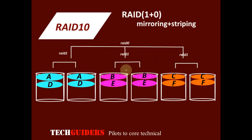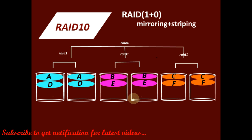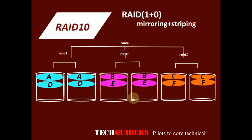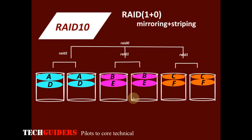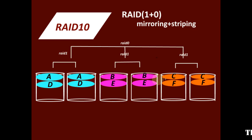What about the performance? First, consider the read performance. Here we are using block-level striping and mirroring. As discussed in the introduction, both of these enable parallelism in read operations, thereby improving read performance. For example, suppose we have a read request for blocks A, B, C, D, E, and F.